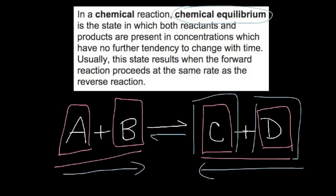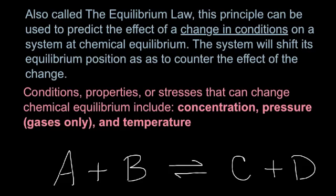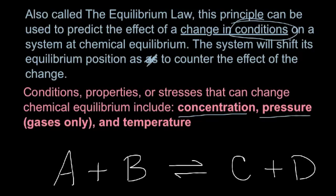It's when you go back and forth between the reactants and products. Now, chemical equilibrium describes a process called Le Chatelier's principle, which is also called the equilibrium law. This principle can be used to predict the effects of a change in conditions on a system at equilibrium. The system will shift its equilibrium position so as to counter the effect of the change. These conditions are concentration, pressure, and temperature.